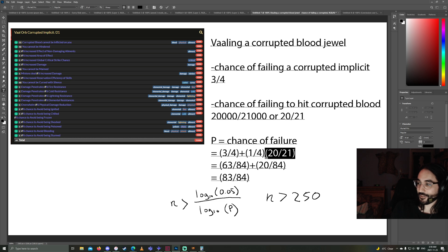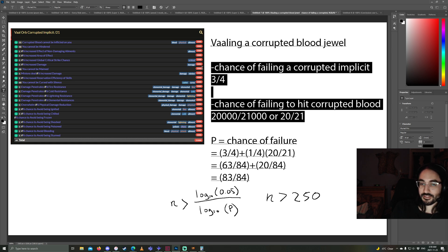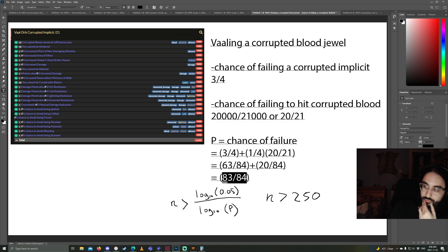Now, this starts to sound kind of confusing, right? But this is showing you how you can even use a somewhat two-step RNG, and you can still plug it into this equation, and you can still get an answer. So, when you just consolidate this out, it ends up being, your chance of failure is 83 out of 84 times.